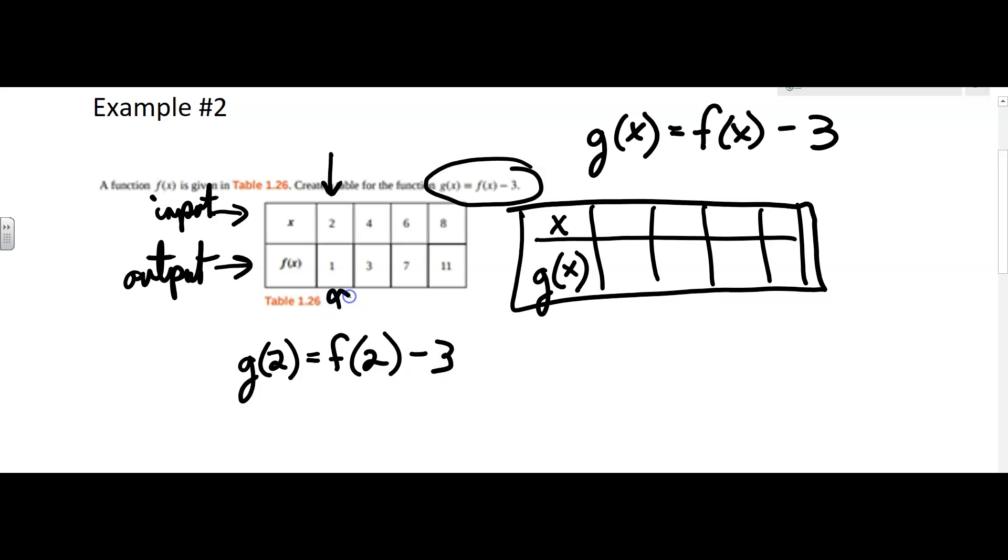But we know what f of 2 is. f of 2 is 1. That comes from that table. When the input was 2, f of 2 is 1. So then I get 1 minus 3, which is negative 2.